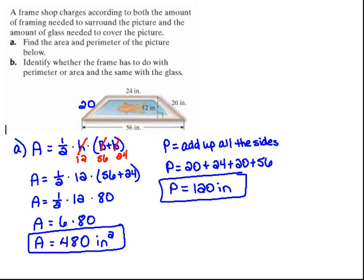Now Part B says identify whether the frame has to do with the perimeter or area, and the same with the glass. So we need to know, is the frame perimeter or area? Well, think about the way that the frame is around this picture. It goes all the way around. That's perimeter. The glass though, glass is all of this area within the frame. That's our area.